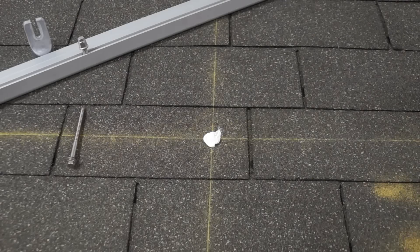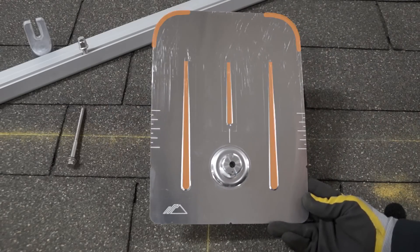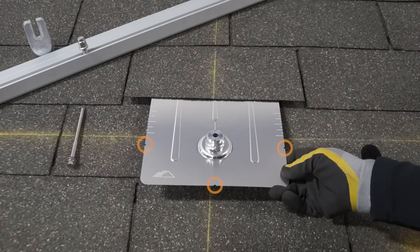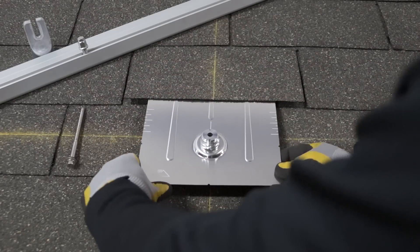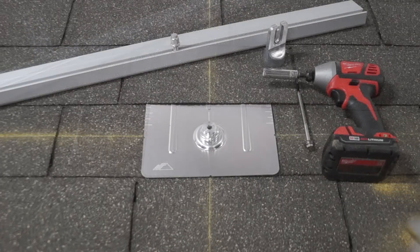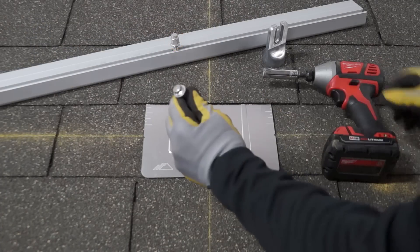Installing Flashfoot II couldn't be easier. Ribs and rounded corners make it easy to slide the flashing between shingle layers, and alignment markers help you center it over the pilot hole. Once centered, you drive the custom lag bolt with the same socket as the rail.